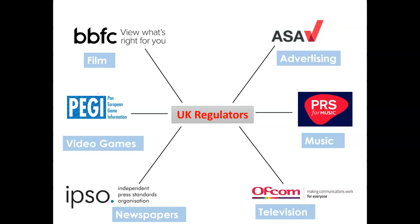Look at the top right — we have the ASA, the Advertising Standards Agency. You might remember that we discussed these in relation to what we call the CAP code, which is a set of regulations and guidance that advertisers must follow. Some of them include the requirement to be truthful — advertisers are not allowed to sell a product using misleading or false information. The ASA also updated their guidance in recent years to ban harmful gender stereotypes in advertising.